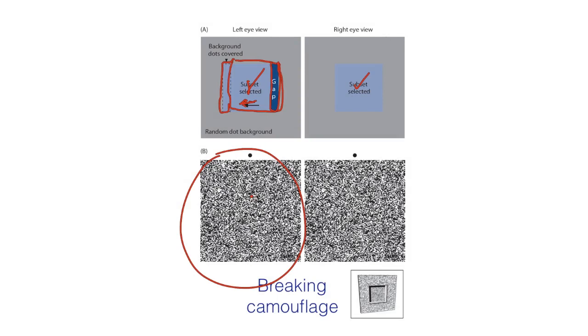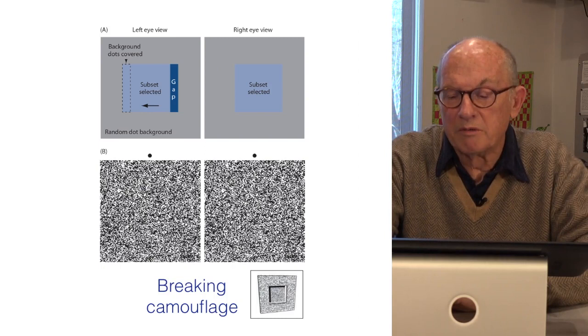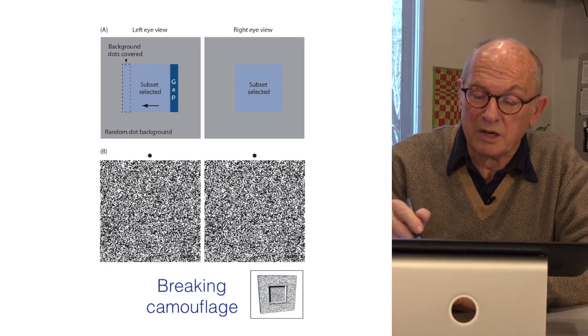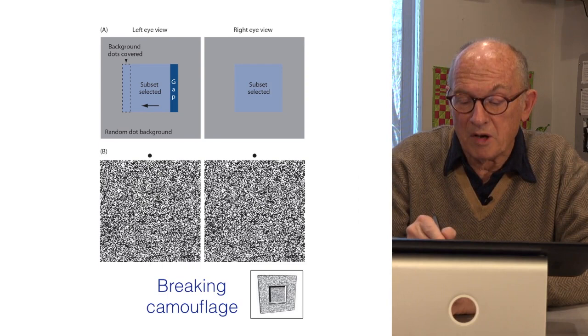Now what you have is two sets of random dots in the two images, and those sets of random dots are perfectly camouflaged unless you use stereoscopic vision. If you look at these with one eye, you'll never see the object that's there. If you look at them with two eyes, you have to fuse the left and the right eye images, and then the object will pop out.